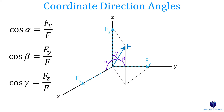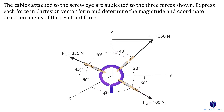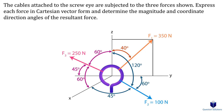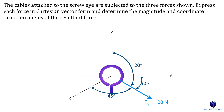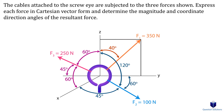Let's look at a problem where we need to express each force in cartesian vector form and determine the resultant force and the coordinate direction angles. Looking at the diagram, forces F2 and F3 have coordinate direction angles. For force F2, there are three angles given — one with respect to the X axis, one with the Y axis, and one with the Z axis — measured between the tail of the vector and the axis. The same goes for F3. Force F1 is on the ZY plane with one angle given, so we use sine and cosine to break its components.